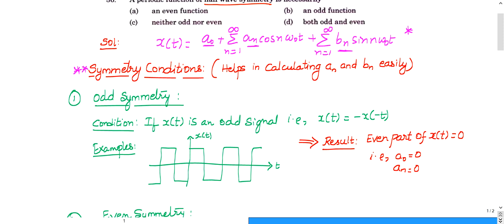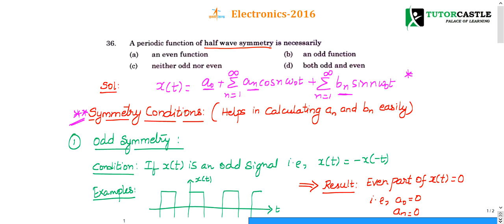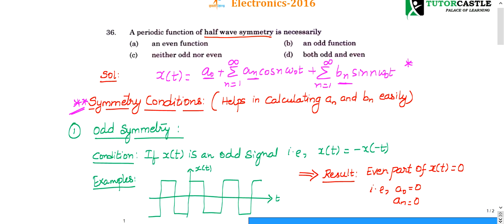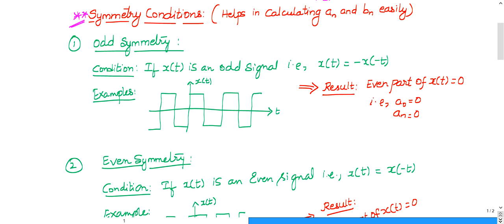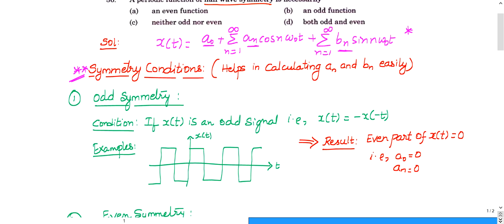Using symmetric conditions, you can easily find an and bn without tedious integration. These are taken from standard textbooks — not a shortcut given by me, but given by some authors. Symmetric conditions are of four types, but I will discuss three simple types.